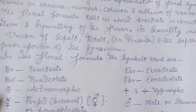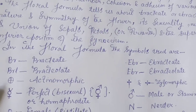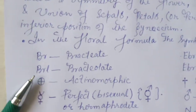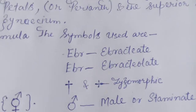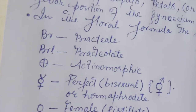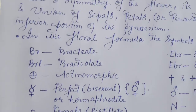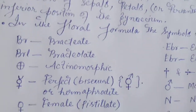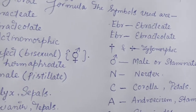In the floral formula, the symbols used are: Br for bracteate, and Ebr for ebracteate (without bract), Brl for bracteolate — that means bracts which are smaller in size — and Ebrl for ebracteolate.